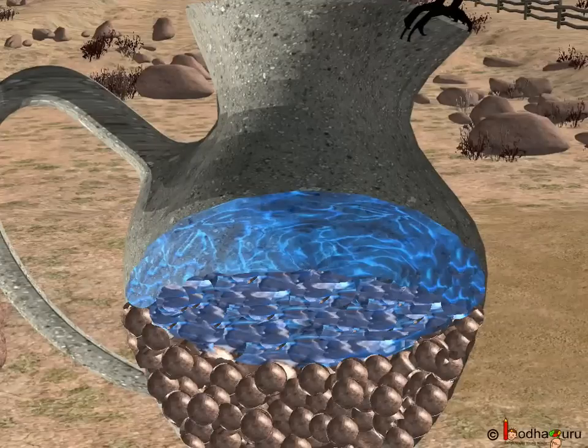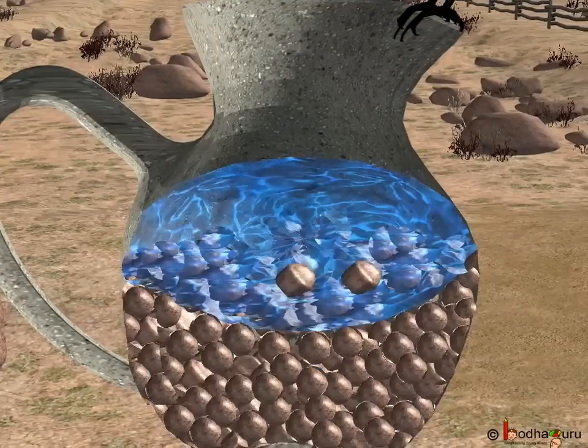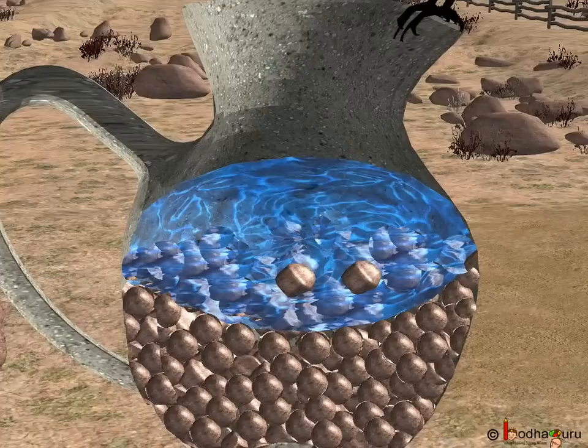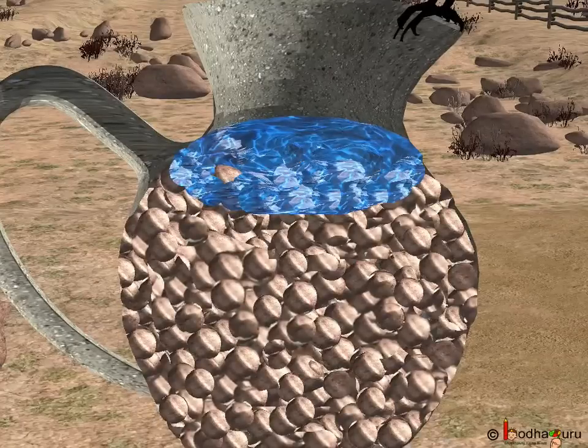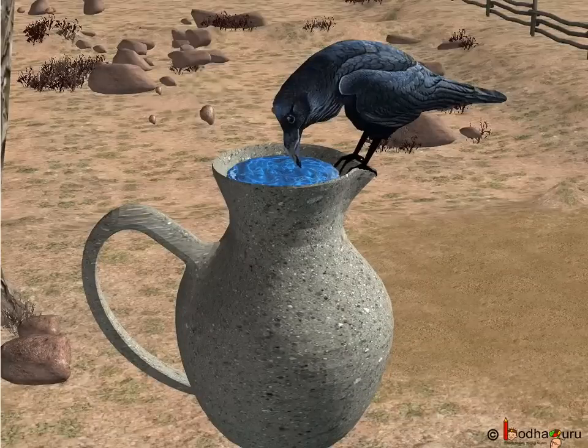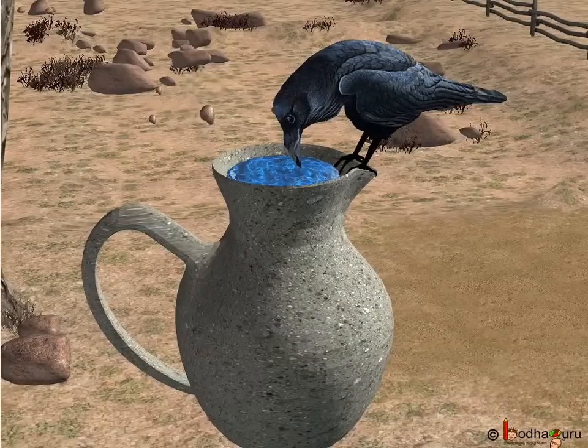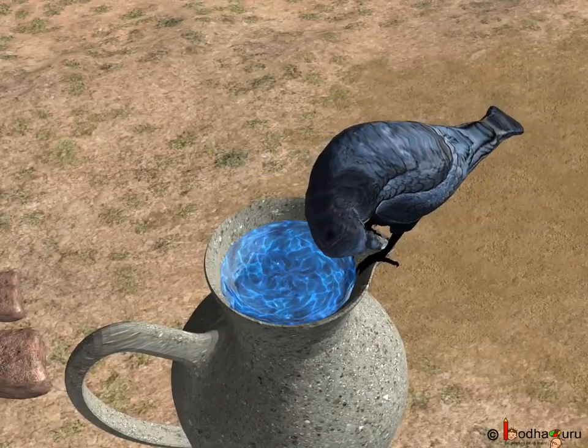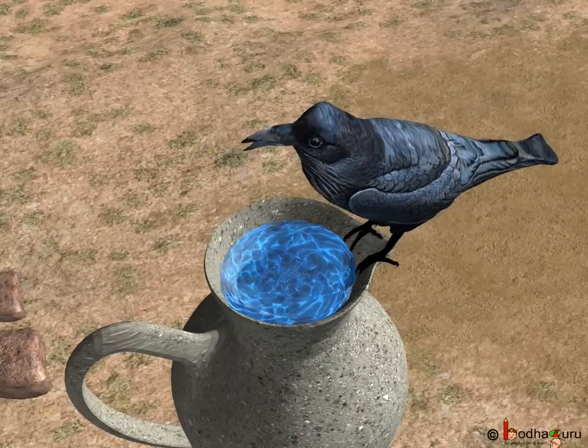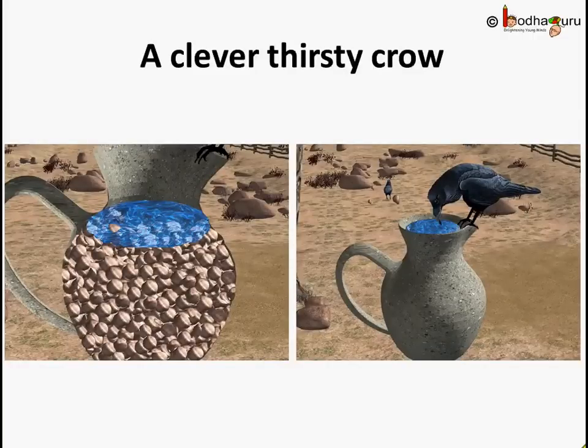Why? Because the stones were taking space at the bottom of the pot and so the level of the water rose. The water level gradually came up and after some time the water level reached so high that the crow could reach the water. Then it drank the water to satisfy its thirst. So what did you learn?